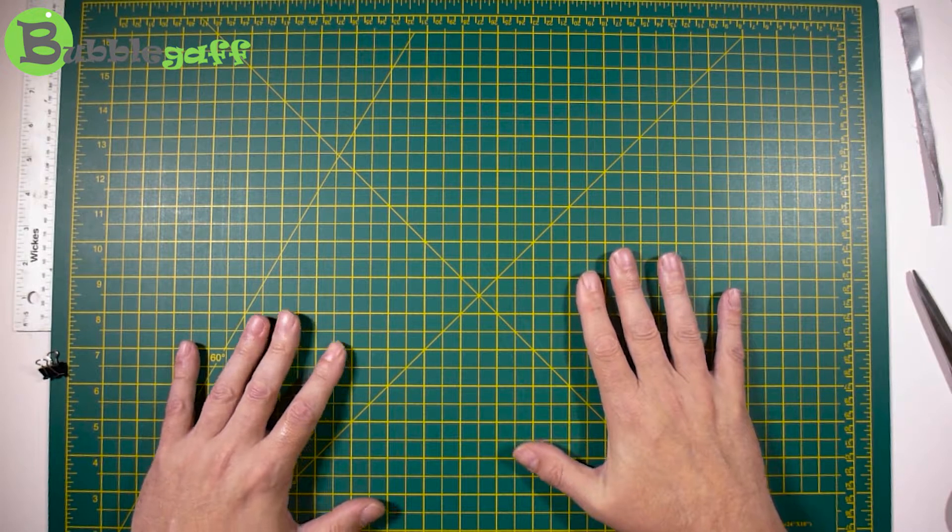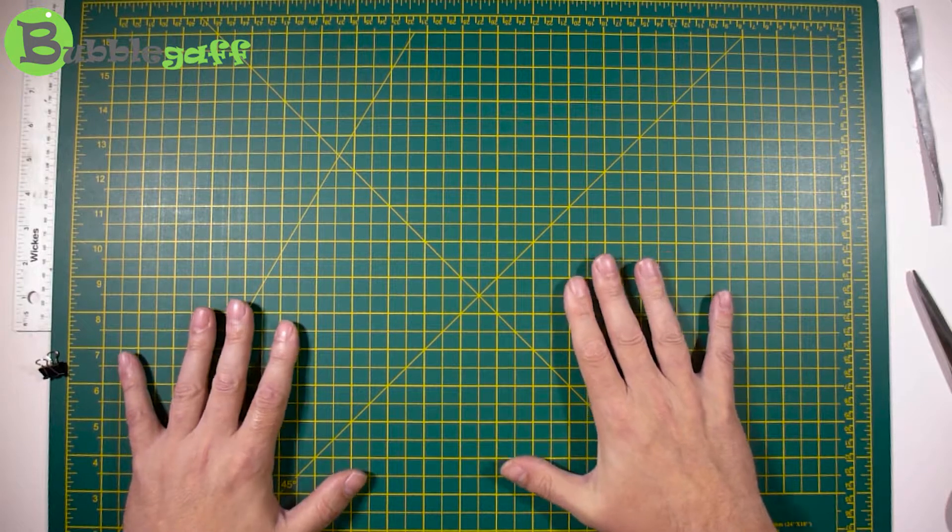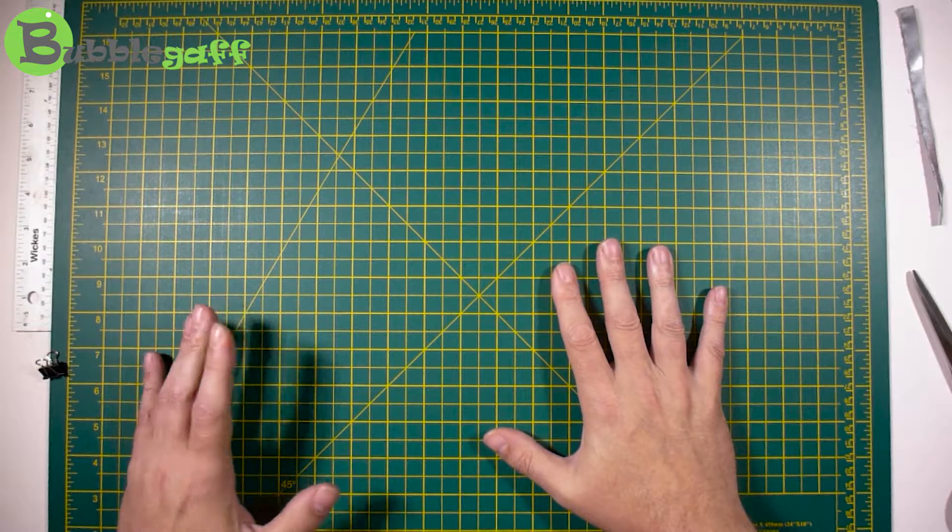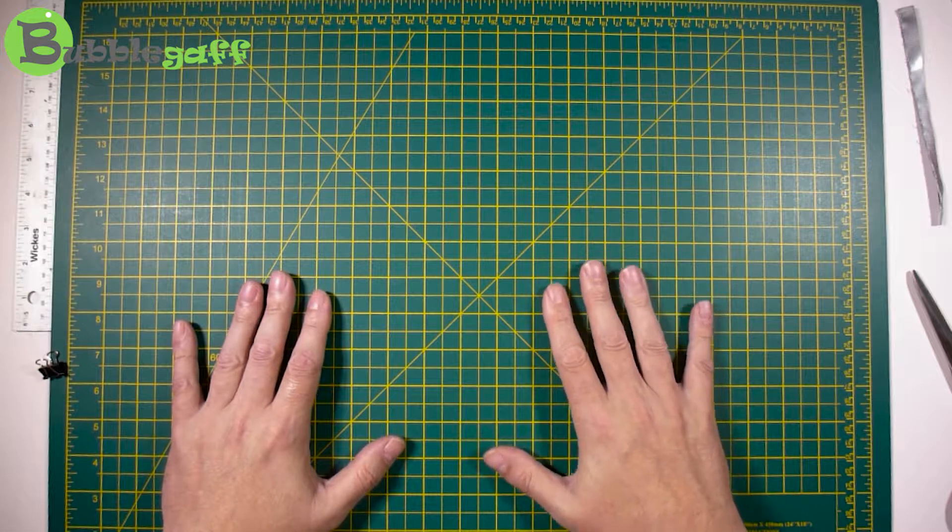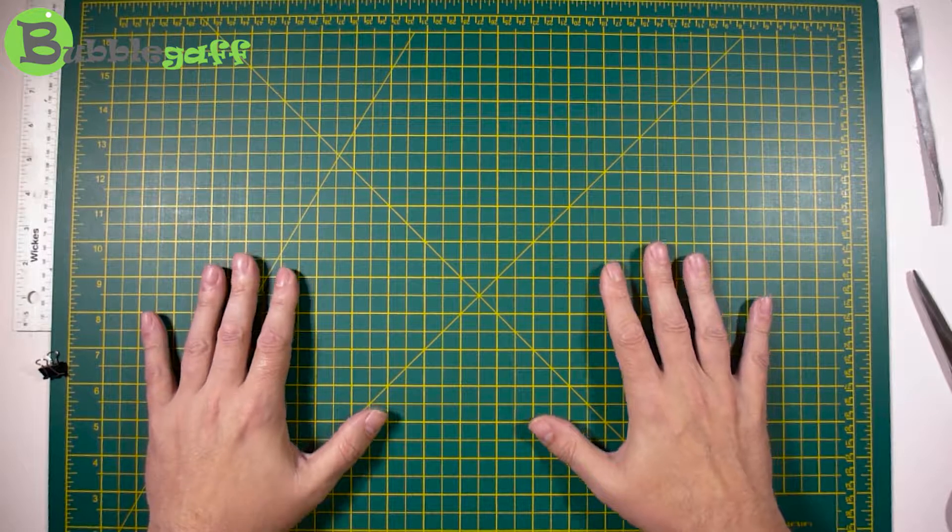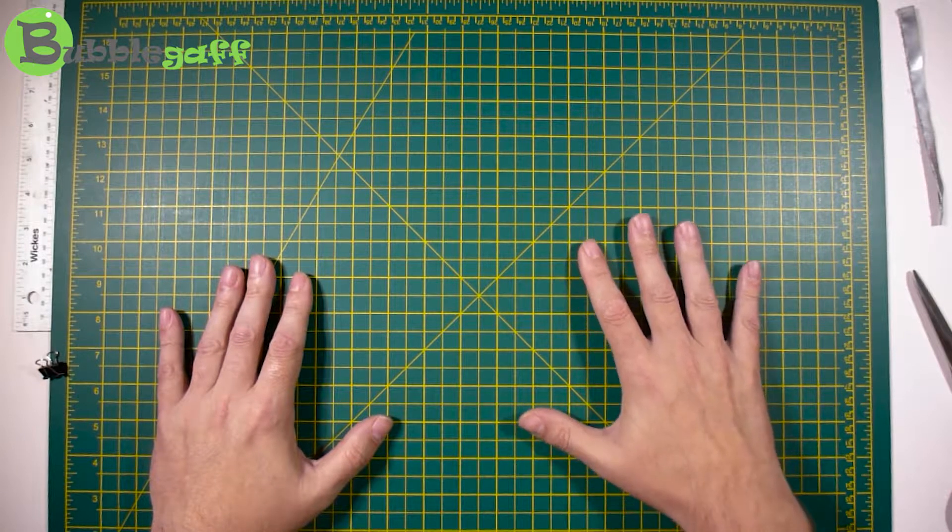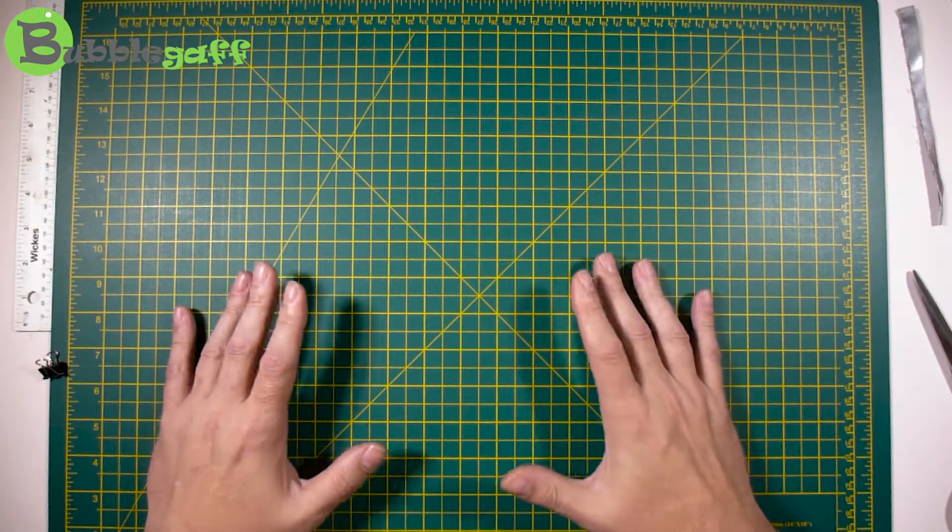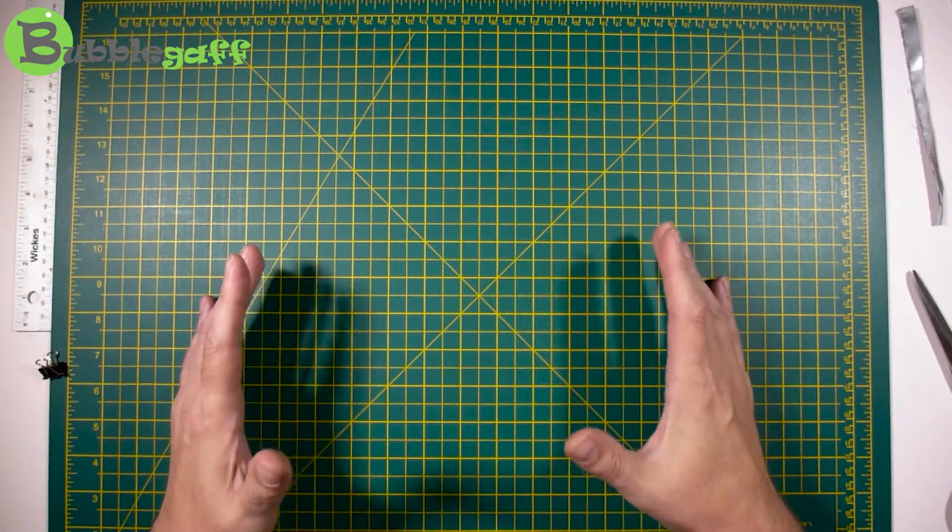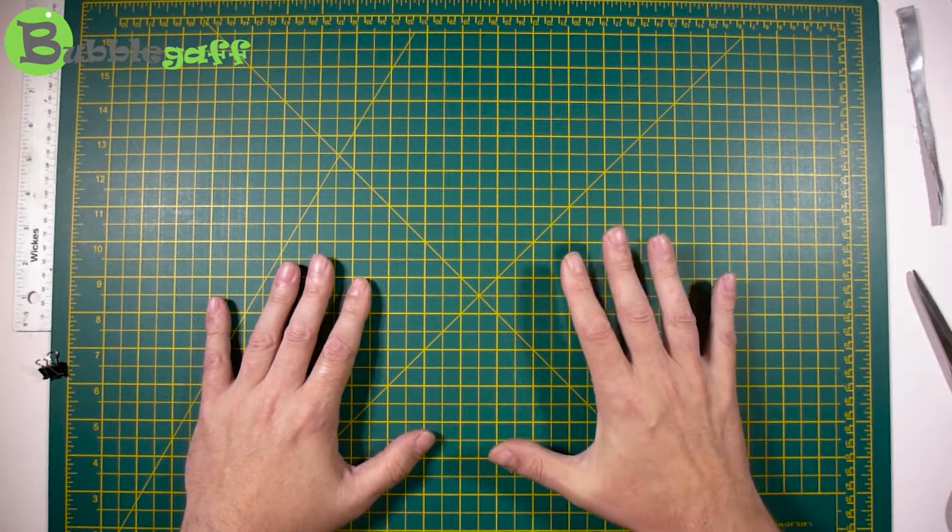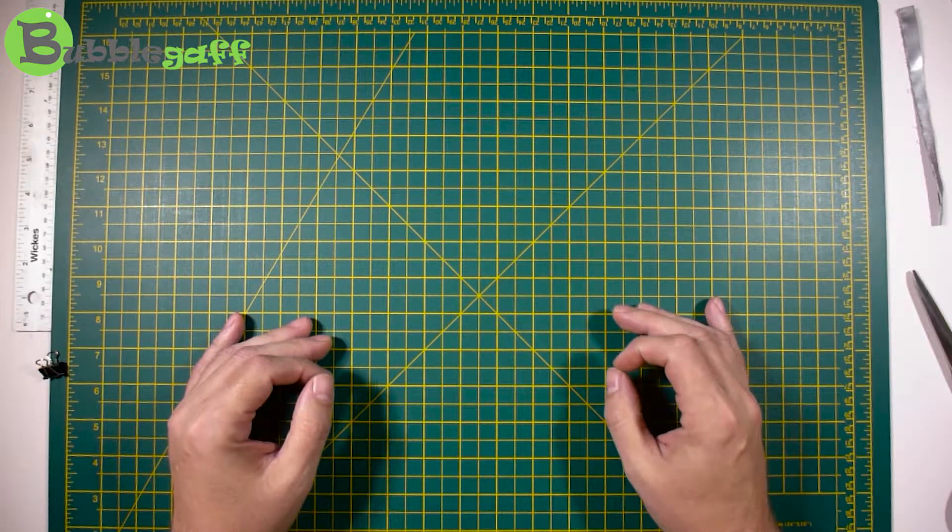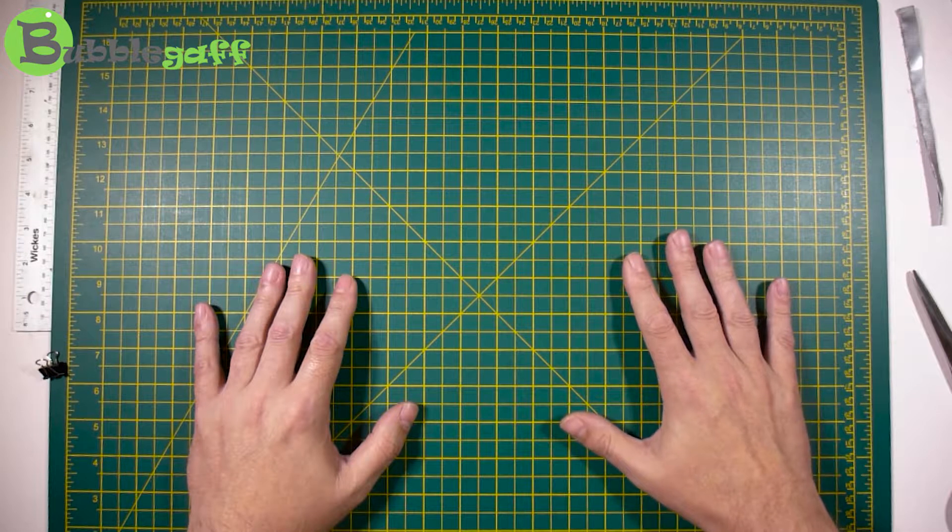Welcome to this video by Bubblegaff. I'm talking about the tools and equipment that I use when making things out of all sorts of materials - not just Bubblegaff - like cutting and marking out. There's no actual design or making of anything in this video. This is purely about what I use, and we can start here.